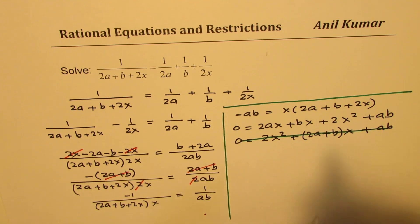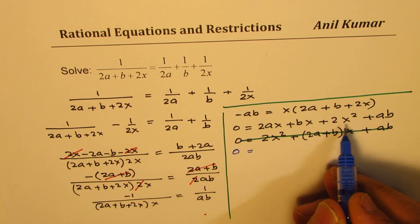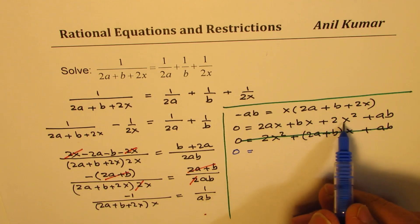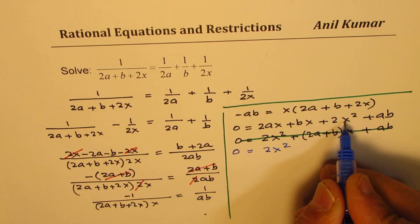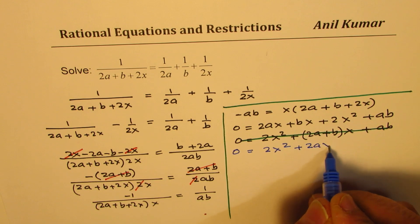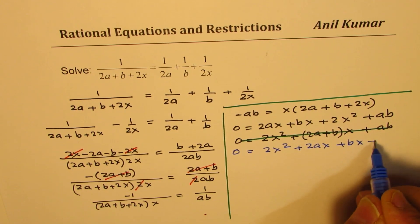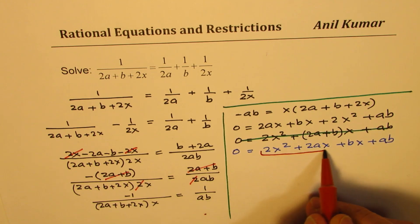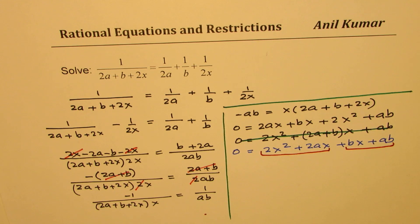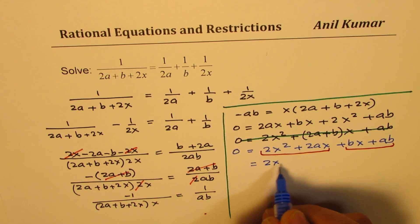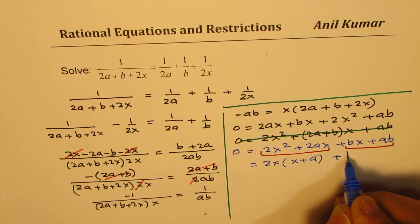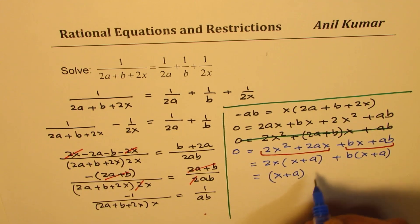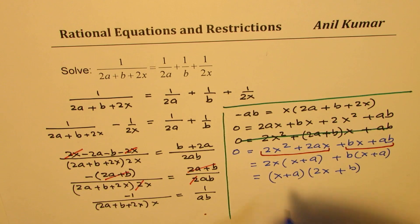Let me rearrange. I will bring this term with this. So I get 2x squared, I will write 2x squared first, plus 2ax, plus bx, plus ab. Does it make sense? So I just reorganized. Basically, I brought this term first so that I could group them to factor. So now I can take 2x common, so I get x plus a here, and I can take b common, I get x plus a there also. So x plus a is common and we get 2x plus b equals to 0.